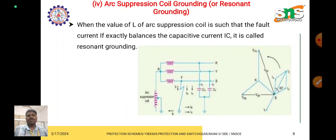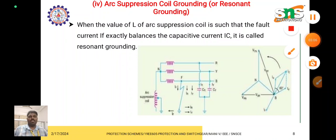The next type is arc suppression coil grounding, also called Peterson coil or resonant grounding. Here the neutral of the three-phase system is connected with the ground through an inductor, but this reactance is variable and adjustable. According to the fault current, the arc suppression coil can be adjusted accordingly.